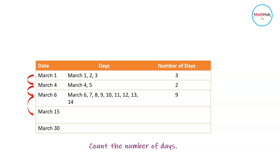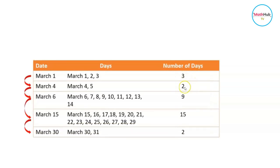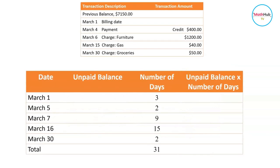Between March 15th and March 30th we have 15 days. Then beginning at March 30th until March 31st, that is 2 days. To check, adding everything should total 31 days: 3 plus 2 is 5, plus 9 is 14, plus 15 is 29, plus 2 is 31 — so we're correct. Using that information we can construct the following table.